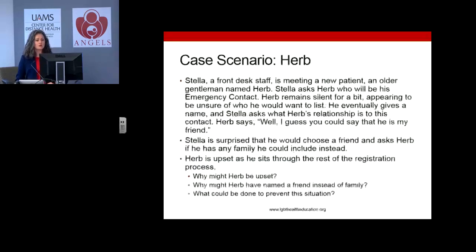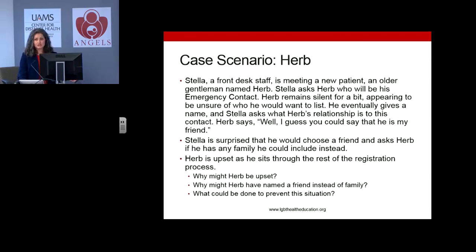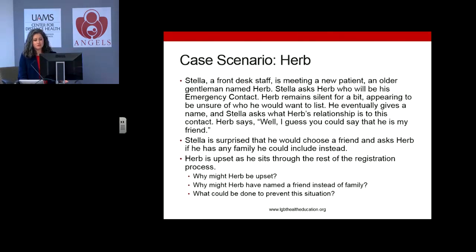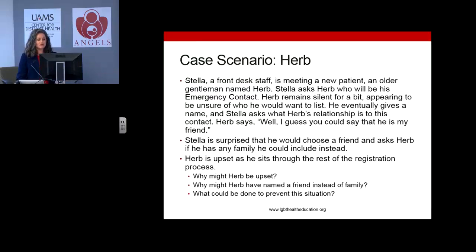Thinking about Herb: he discloses a friend as a preferred contact on his paperwork, and Stella, who's working with him, is surprised and asks why he couldn't include a family member instead. Why would this upset Herb? Clearly, he has a complicated relationship with his family — perhaps rejected or ostracized. We want to respect Herb's wishes, accept the listing of any friend or close confidant as a preferred contact, and not probe into situations that are not clinically relevant. If all we need is a name and phone number for a preferred contact, let's leave it alone.